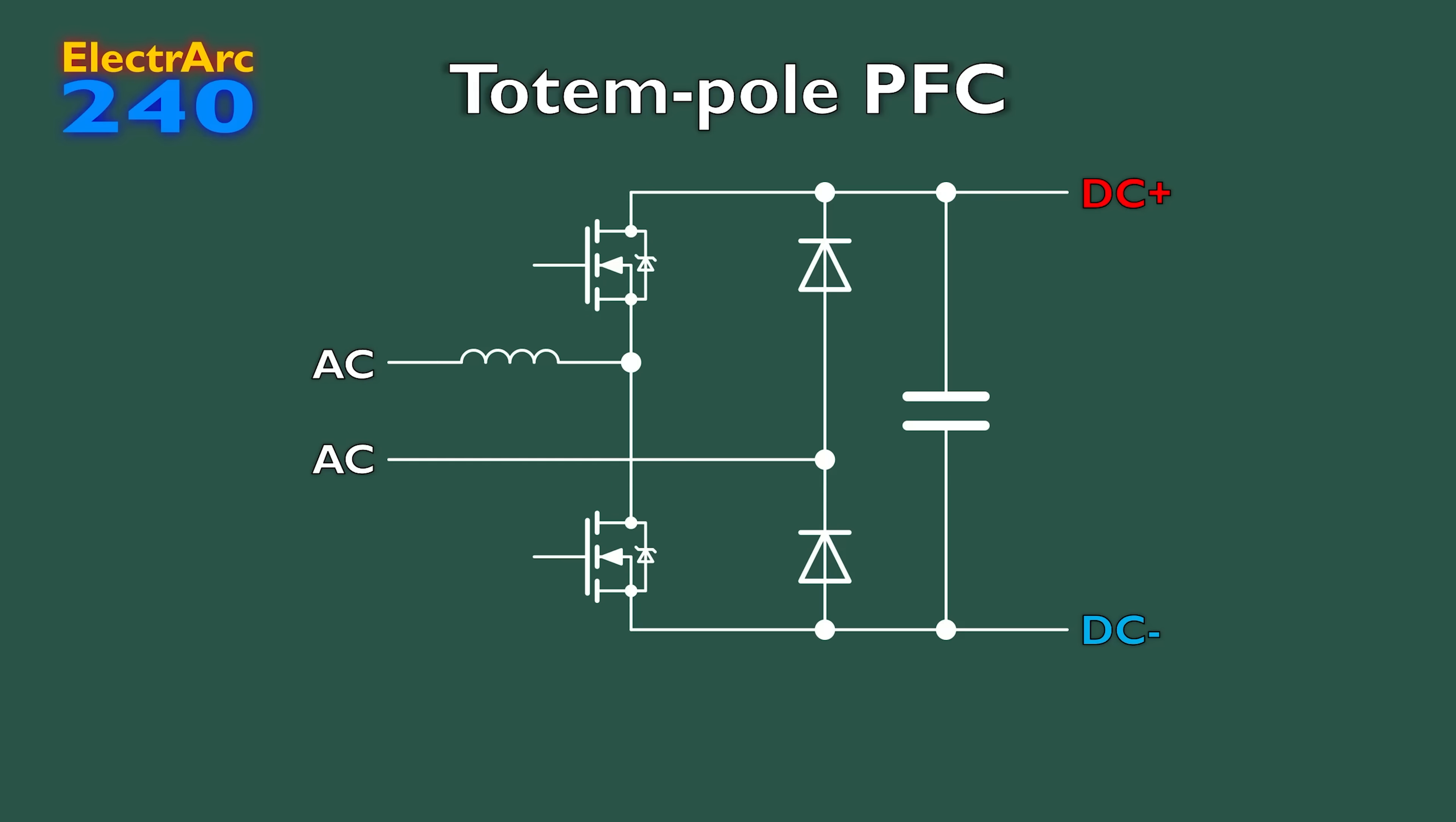Next is totem pole PFC, which essentially just swaps one of the pair of diodes in the rectifier with a synchronous boost converter like this. Again, this can bring efficiency improvements, and also reduces component count, which is always a good thing. Both of these can be further improved by swapping their remaining diodes with MOSFETs, or other active switchers, which have lower conduction losses than diodes. Doing this makes the two circuits the same, an active full bridge with a series inductor to the grid. This is pretty much an ideal AC to DC converter, with a controllable output voltage, sinusoidal input current, it can even run in reverse, to send nice clean power back into the grid.